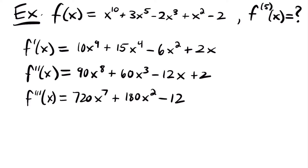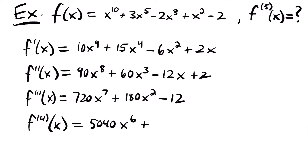Now let's find our fourth derivative. The fourth derivative of f of x is equal to 7 times 720, which is 5040, times x to the sixth power — just subtracting 1 from our exponent of 7. Then we add 2 times 180, which is 360, times x. The derivative of negative 12, which is a constant, is just 0. So now we have our fourth derivative, and we can finally find our fifth derivative.